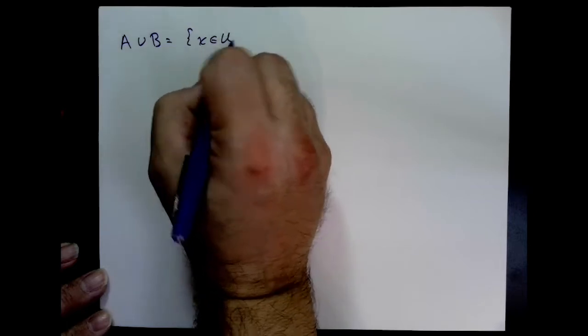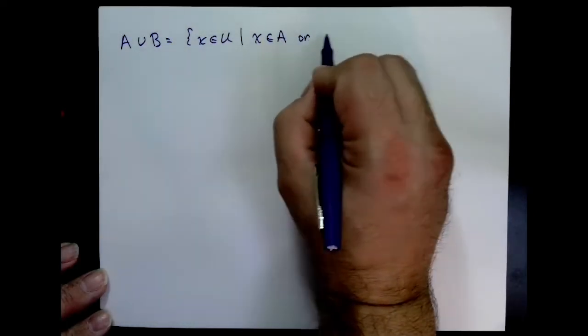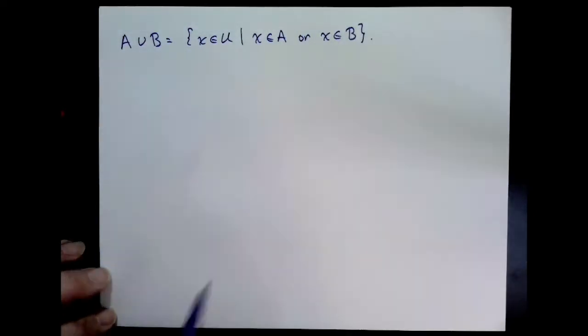Throughout this lecture, we will always assume that there's a universal set U, and that A, B, C, etc. are all subsets of this same universal set U.